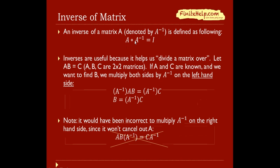An inverse of the matrix is defined by the following: when you have a matrix A times its inverse, denoted by A to the negative 1, then you get the identity.